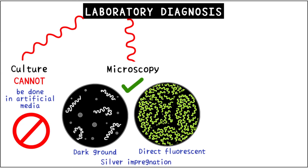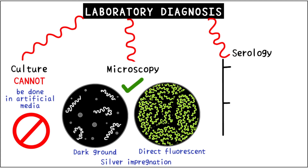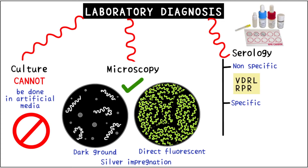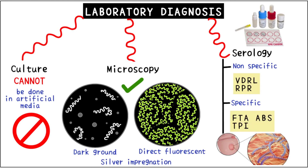The most definitive way of diagnosing syphilis is serology, by running tests on the individual's blood. Serology can be of two types: non-specific and specific. VDRL and RPR are the most widely used non-specific methods, while FTA-ABS is the most important specific test. Even if a person tests positive on a non-specific test, we have to reconfirm for syphilis using a specific test. Primary syphilis is best detected by microscopy, by simply taking a swab of the lesion and staining it to reveal the treponemes.